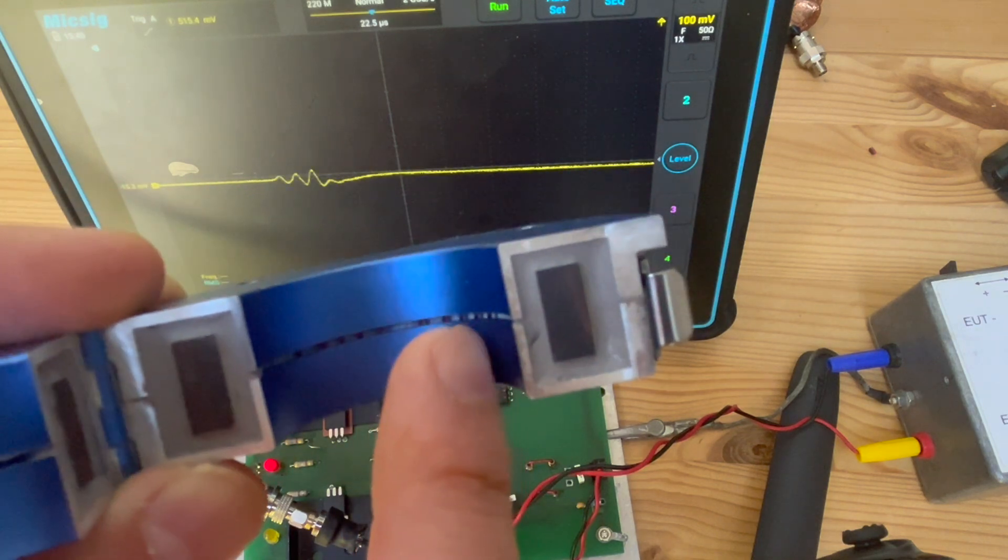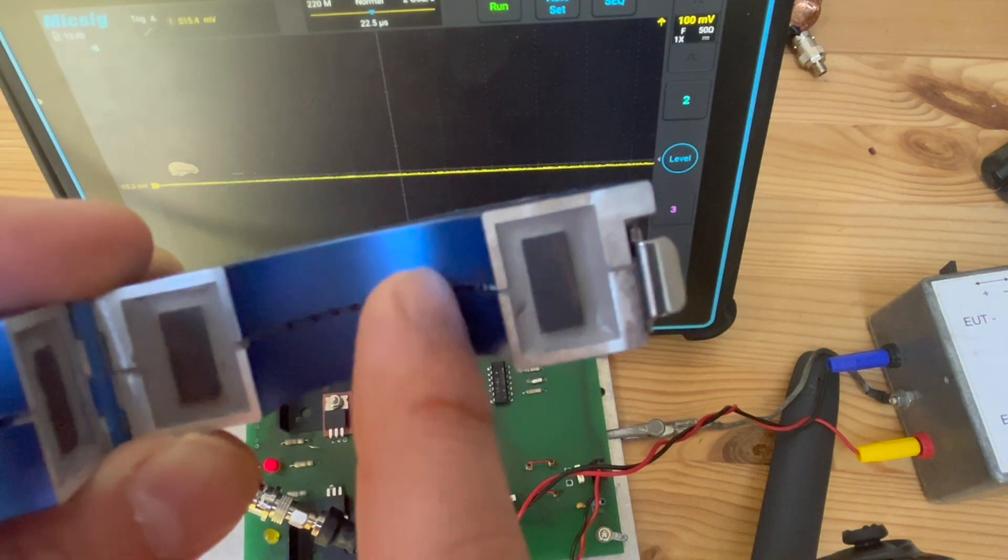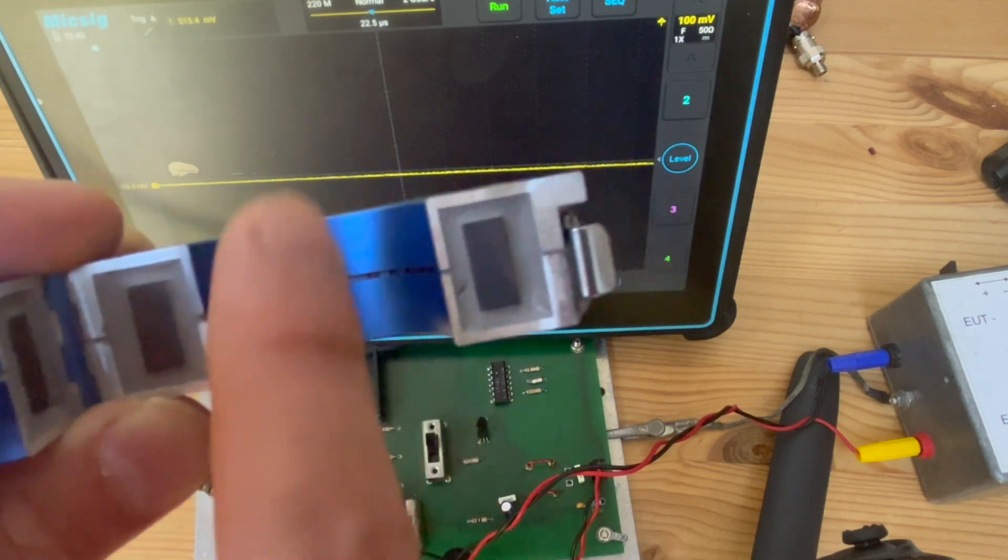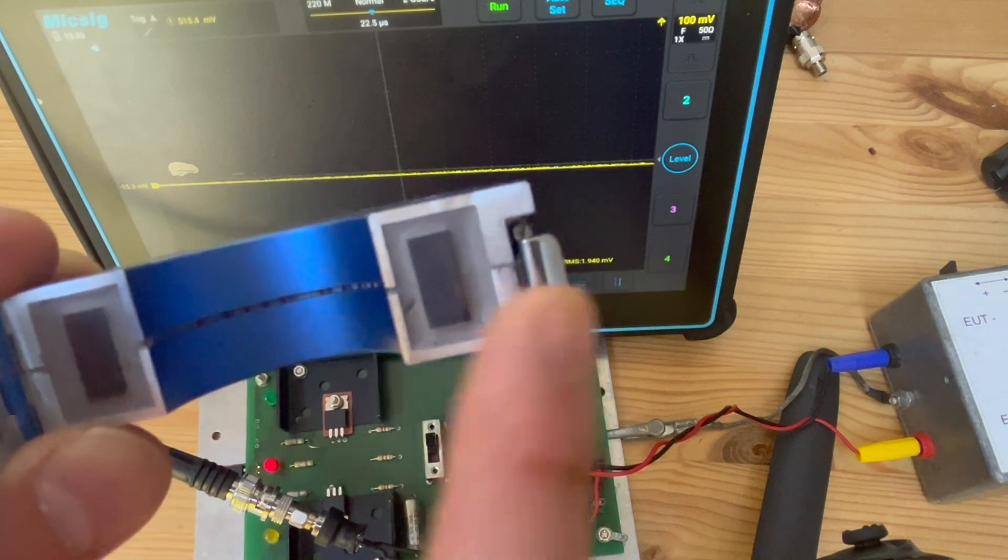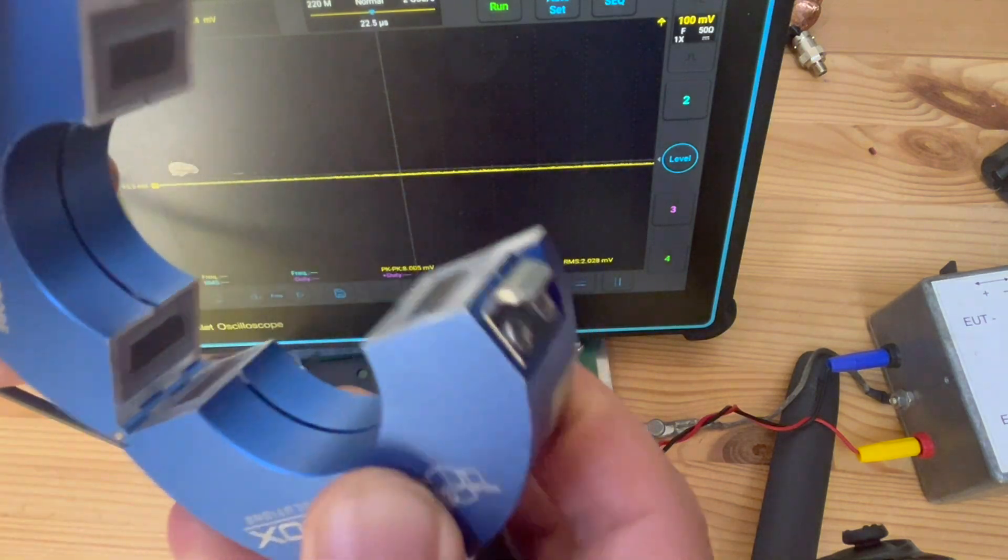Those basically are the number of turns that is wrapped around this half donut-shaped ferrite core. When you close it, you see, this side is like this.